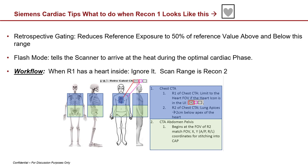When recon one has a heart in it, leave it alone and recon two becomes your scan range. In retrospective gating mode, this reduces the reference exposure value to 50% above and below this heart region, reducing radiation dose for areas that don't require sub-millimeter spatial resolution. The aorta is four centimeters wide and doesn't need as much dose, whereas coronary arteries may only have three to five pixels across and need more dose because they're much smaller objects.